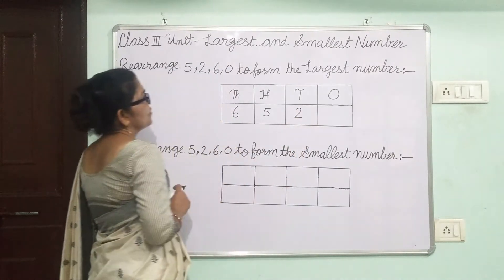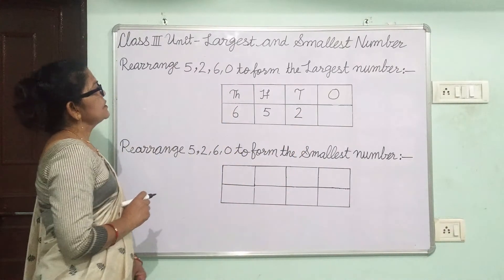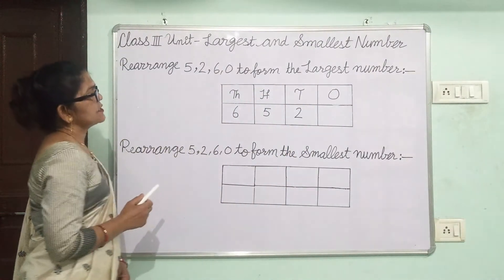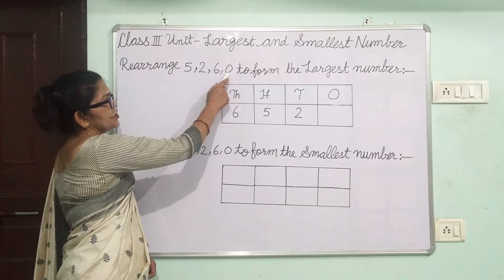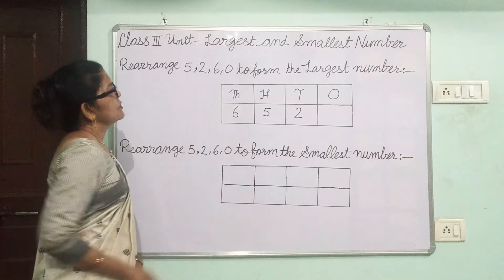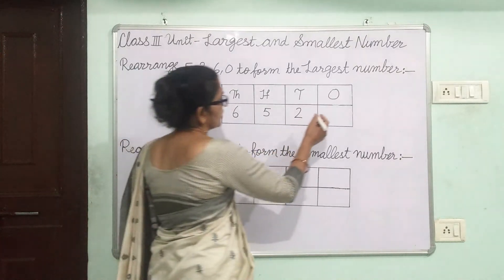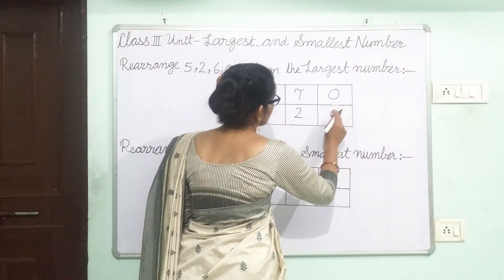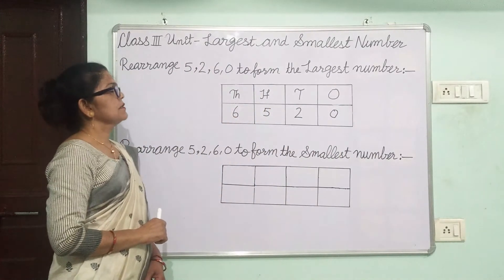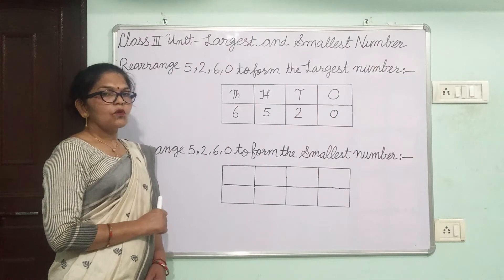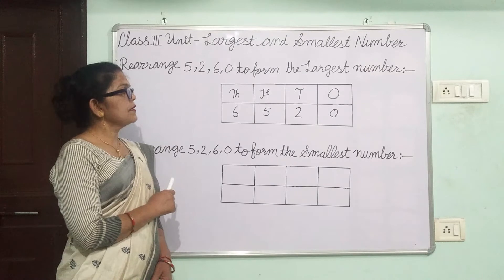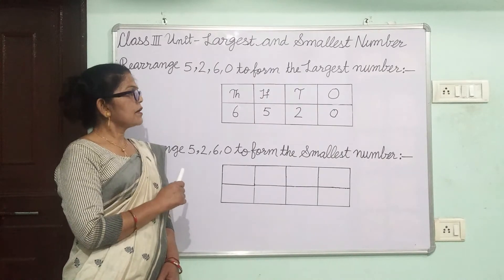Now, we will write the smallest number in the 1s place. The smallest number is 0, so 0 will go in the 1s place. Students, you can see that we have rearranged the given digits to form the largest number: 6520.